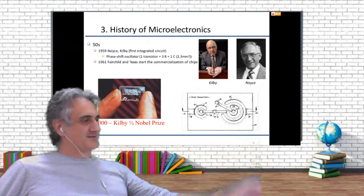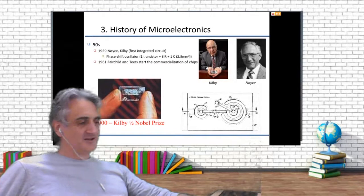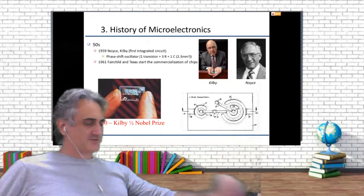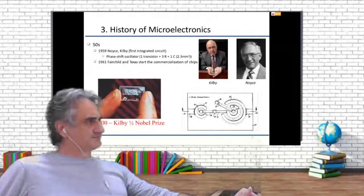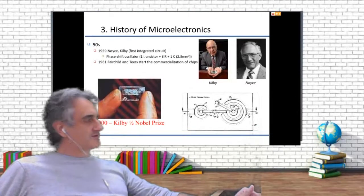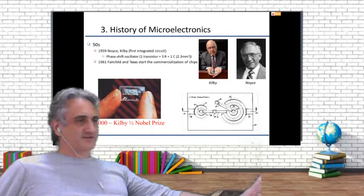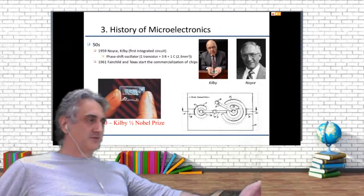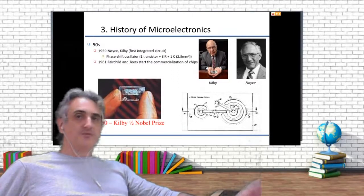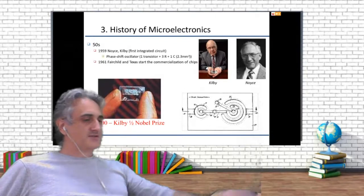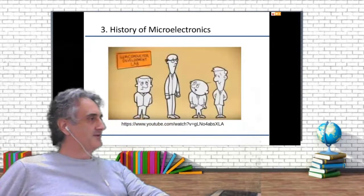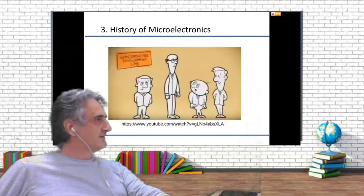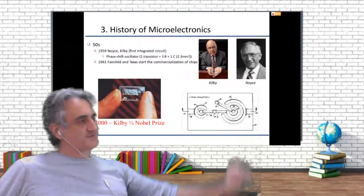It was something with just one transistor, three resistors, and one capacitor — a phase shift oscillator. It was the first integrated circuit. But this is not what we are using now. What we are using now is something more complex that was developed by Noyce, the other guy.